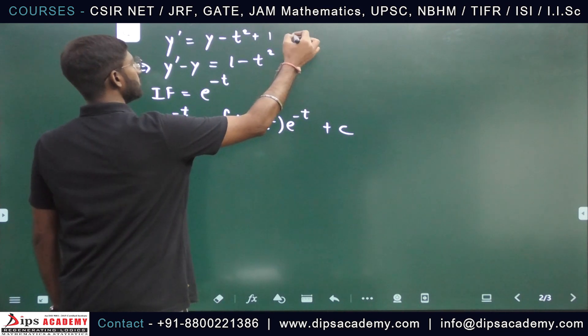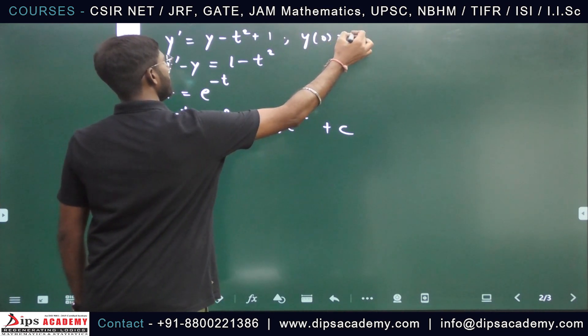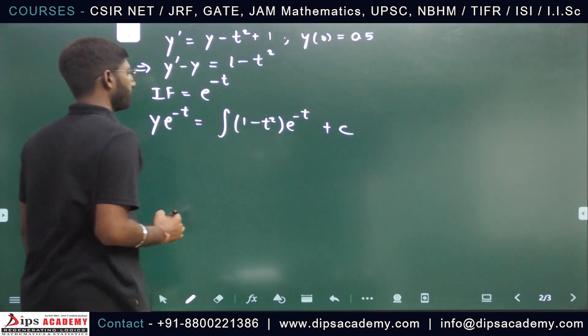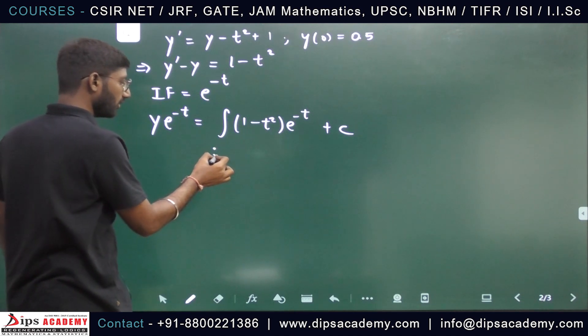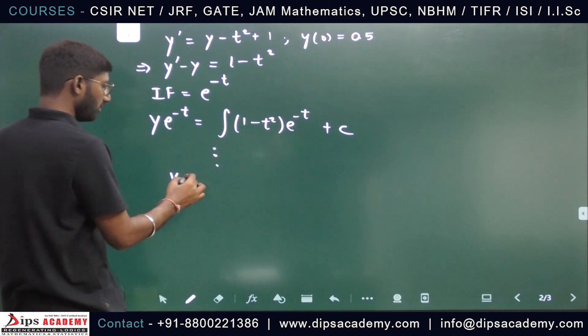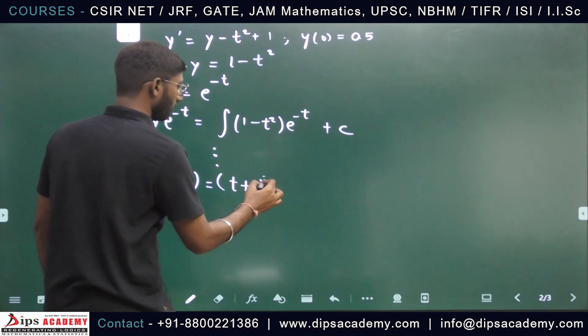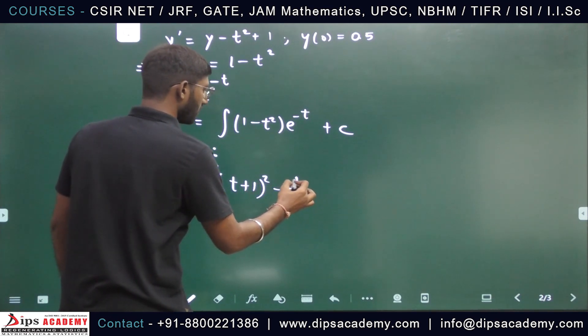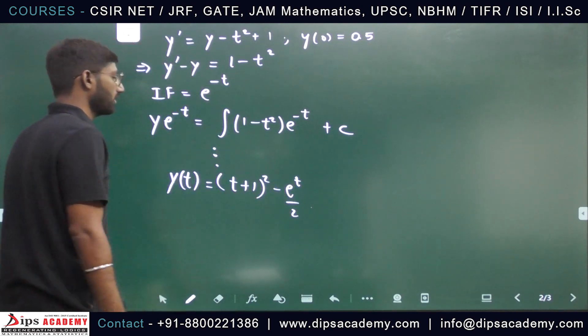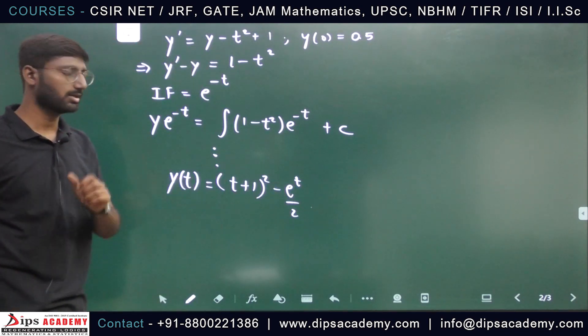You have the condition y(0) equals 0.5, so here you need to solve. The solution will be (t+1)^2 - e^t divided by 2.